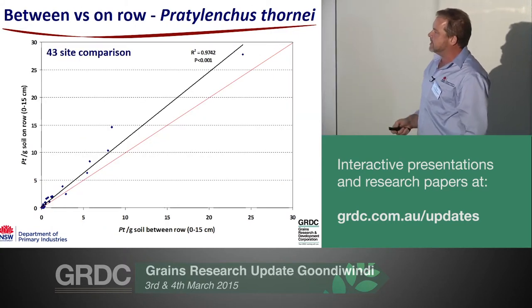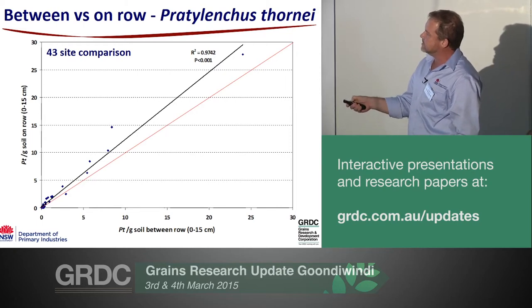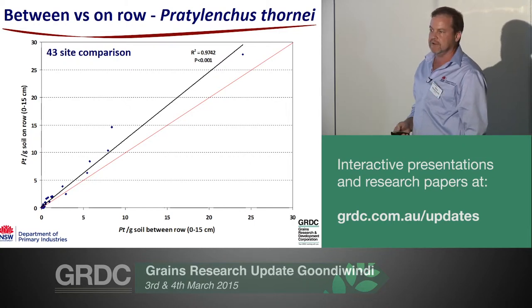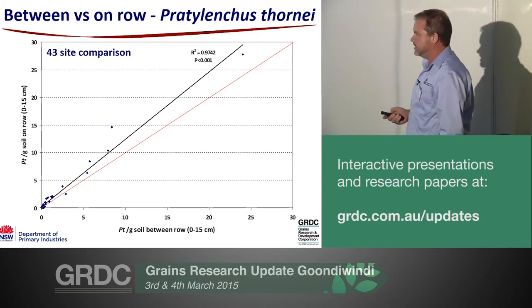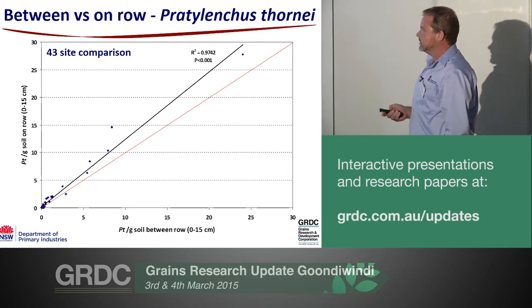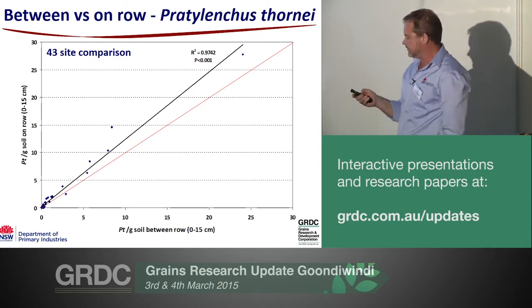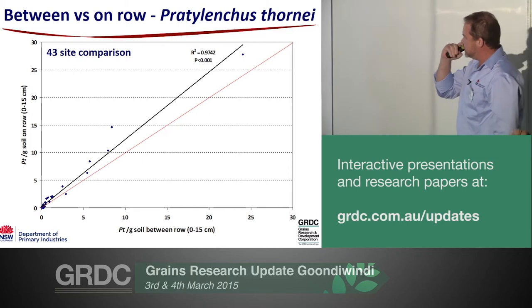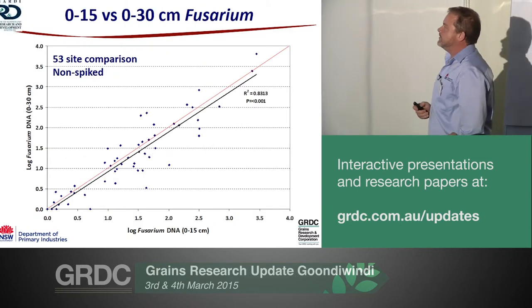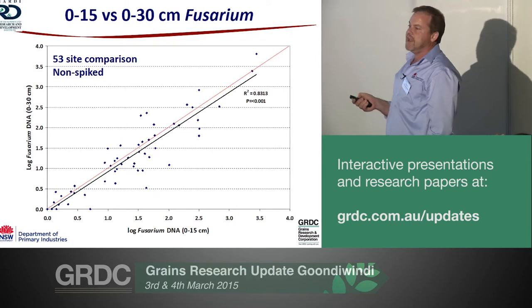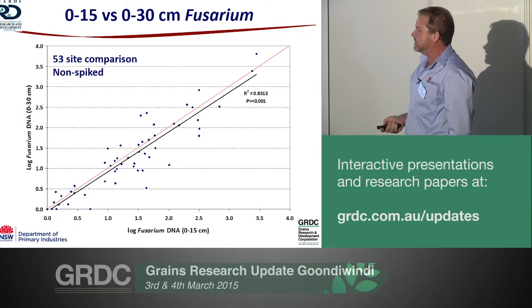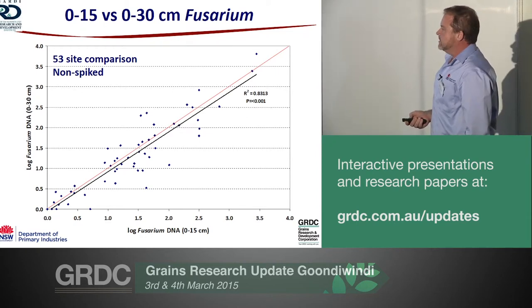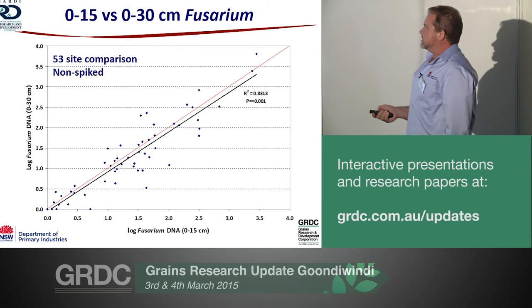Between-row and on-row sampling does make a big difference. Looking at the 1-to-1 line, results are generally sitting above it, meaning we're picking up higher numbers going on the row than going between the row — with 0-15 cm sampling. We didn't run the on-row versus between-row comparison for 0-30 cm. That difference might relate to the root profile and how roots go down; once we get to 0-30, it might change.